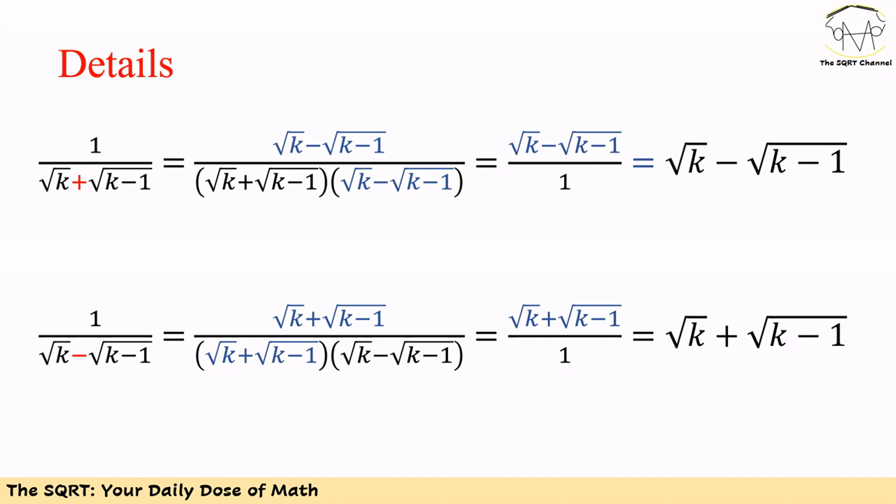On the other hand, 1 over (√k minus √(k-1)) can be simplified using the same trick, but this time you need to multiply both top and bottom by √k plus √(k-1). If you do this, then the numerator of the expression is going to be √k plus √(k-1) and the denominator is going to be 1, which gives the final answer.